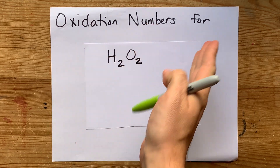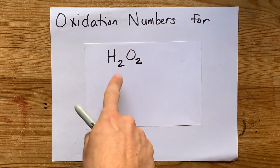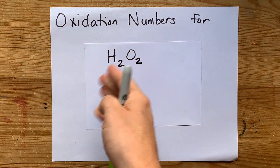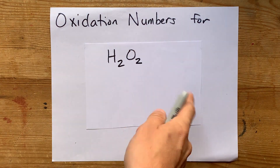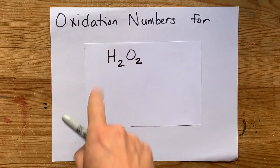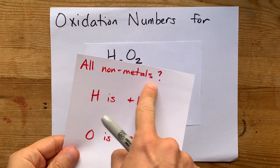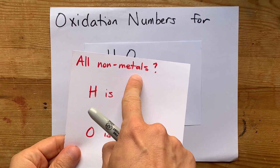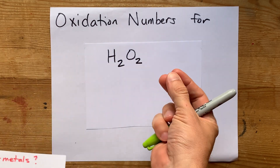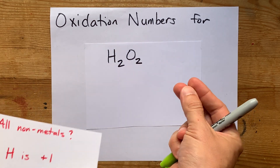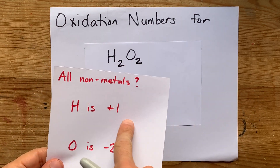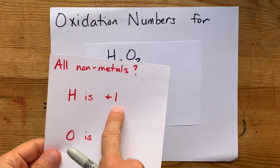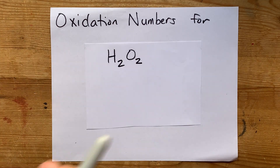We're doing the oxidation numbers for H2O2, hydrogen peroxide. For chemicals that are molecular — as in all non-metals, not including actual metals — the highest priority rule is that hydrogen is plus one.